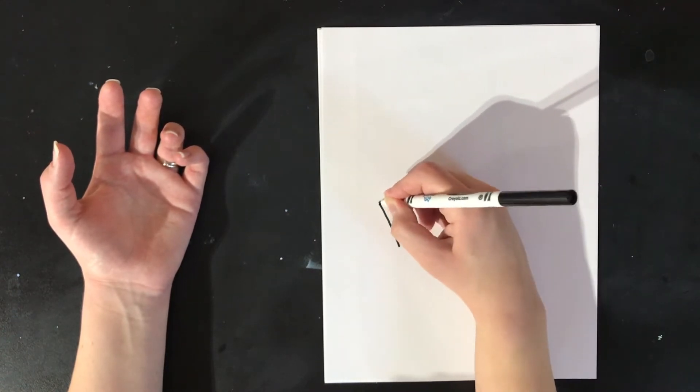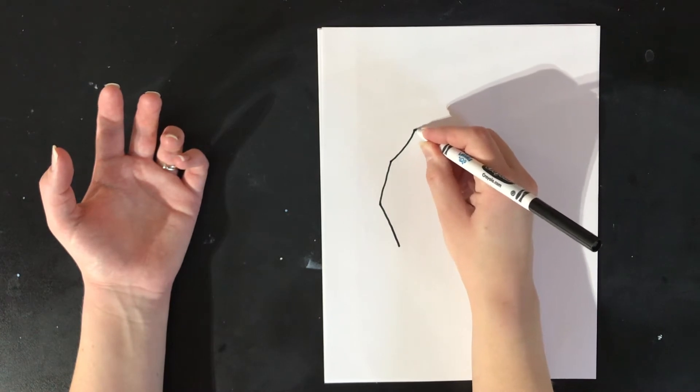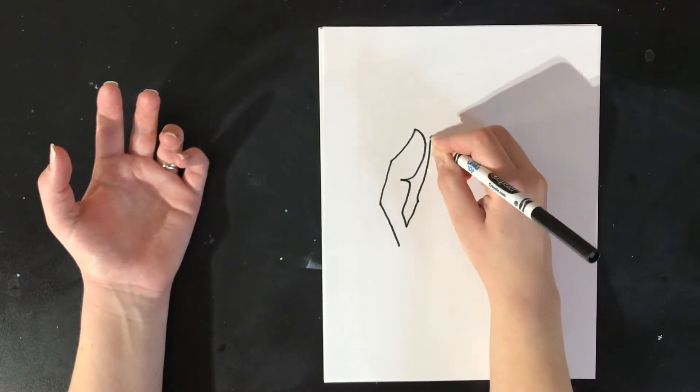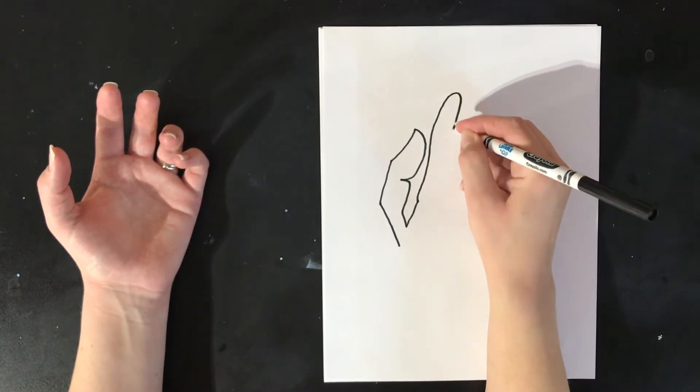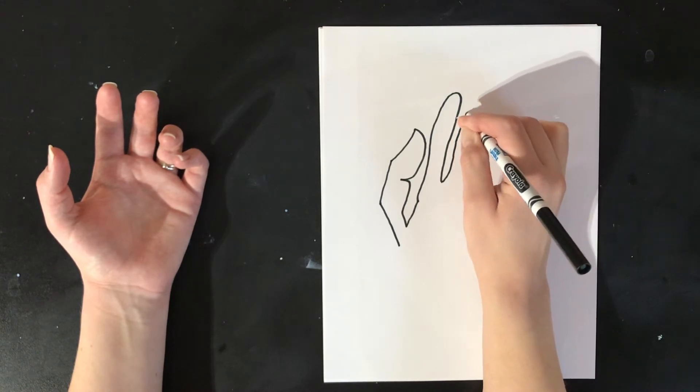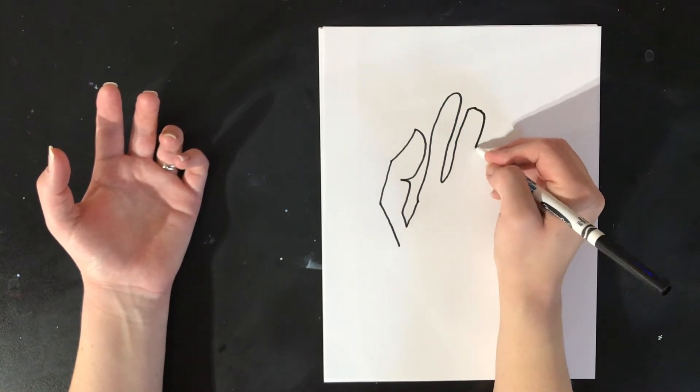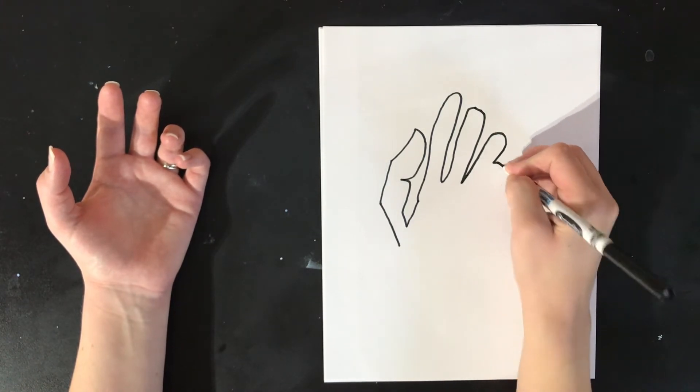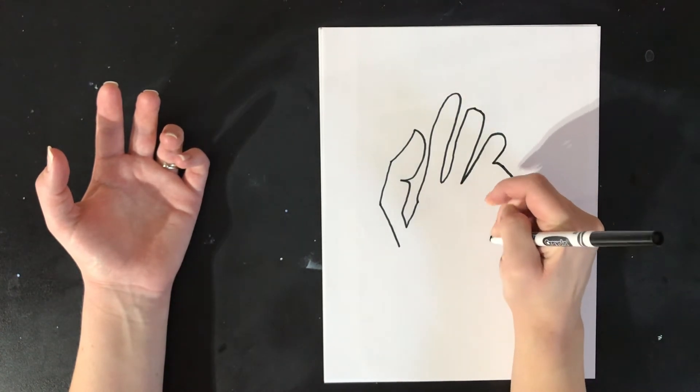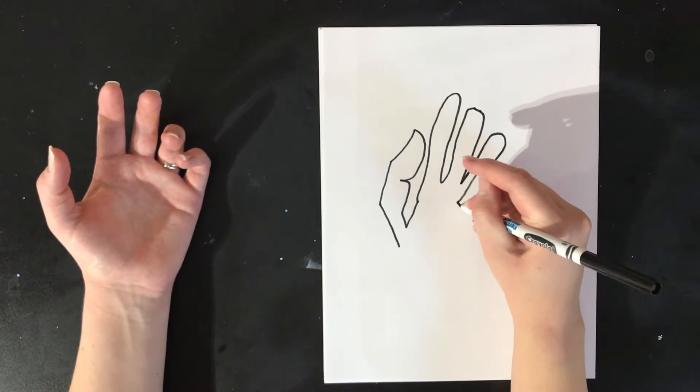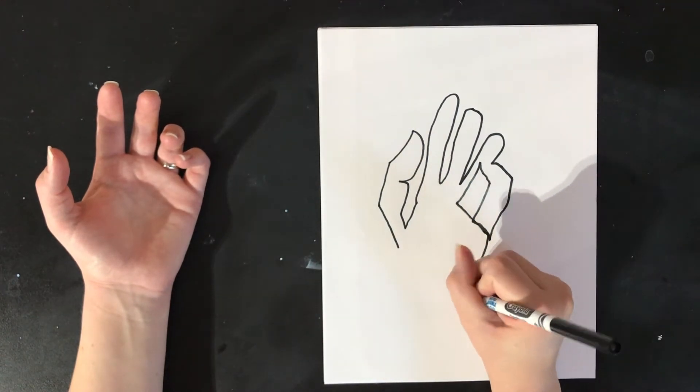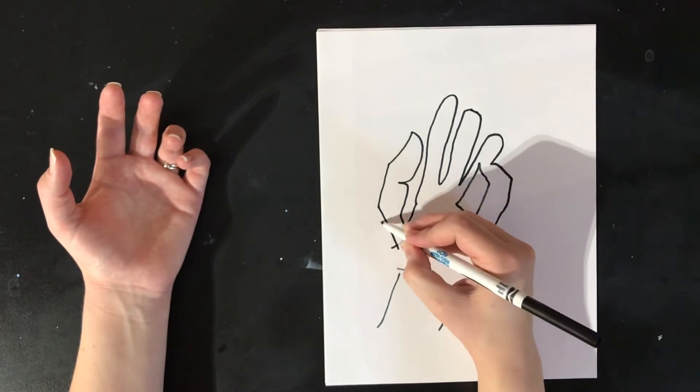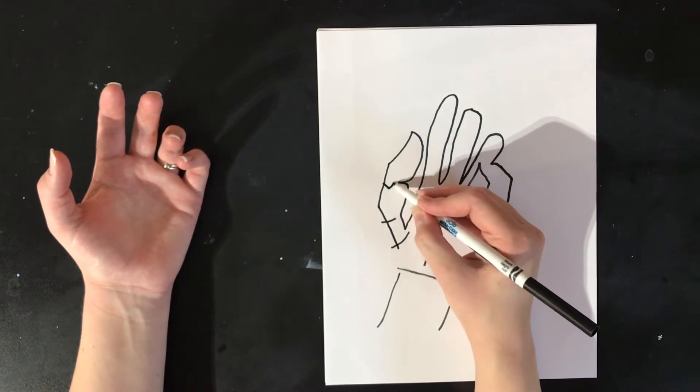I'm going to start drawing the outline of my thumb and my other fingers, making sure I'm not looking at my paper. I'm going to draw the lines inside my hand too and on my fingers. I don't look at my paper to make sure I'm in the right spot, I'm just guessing.